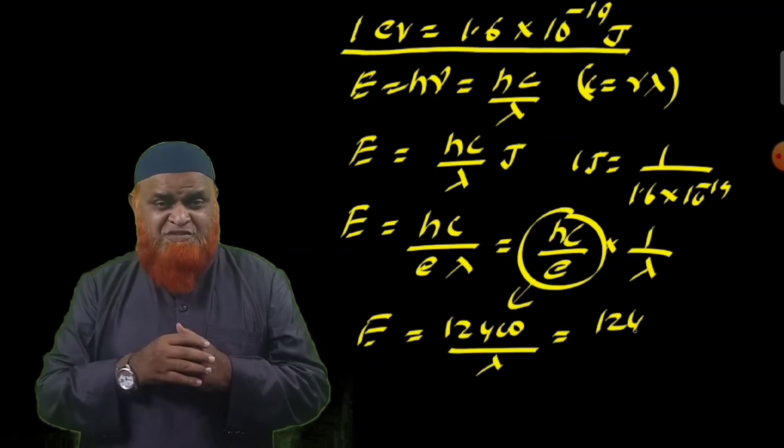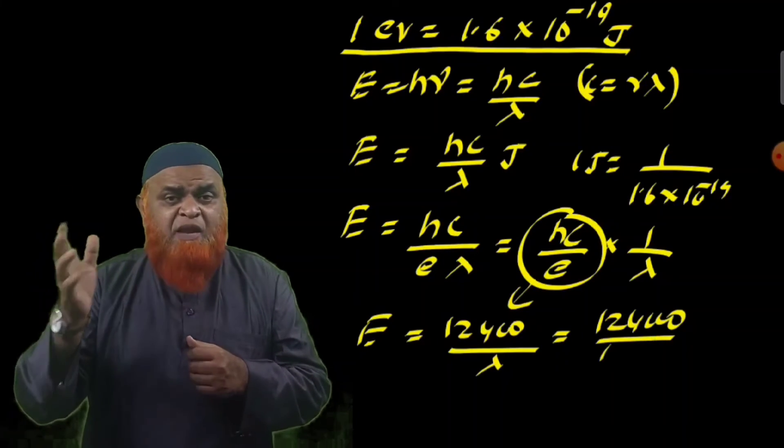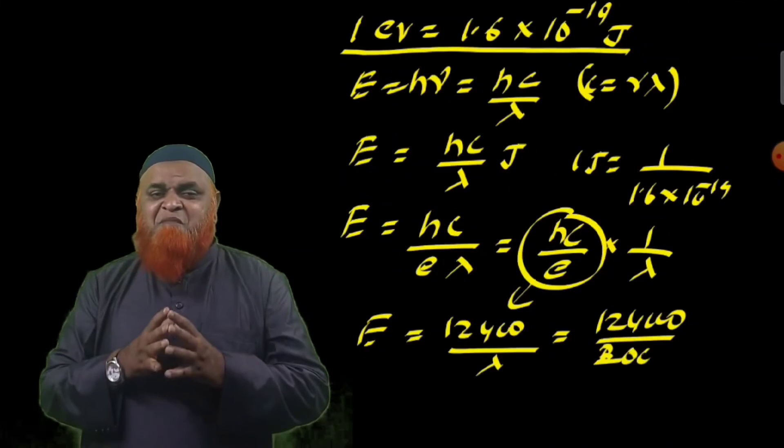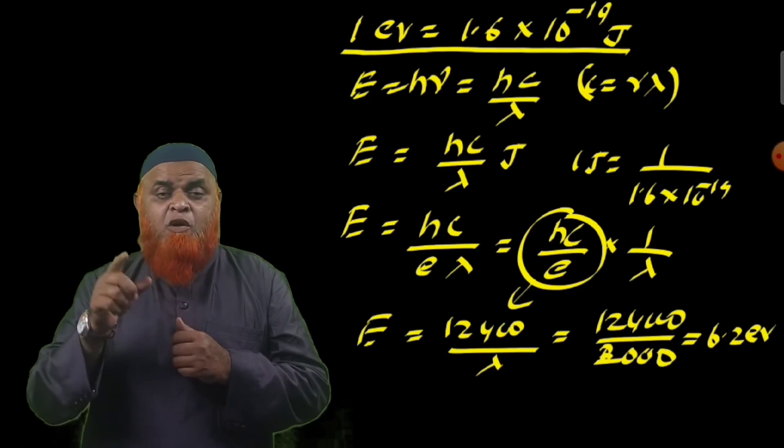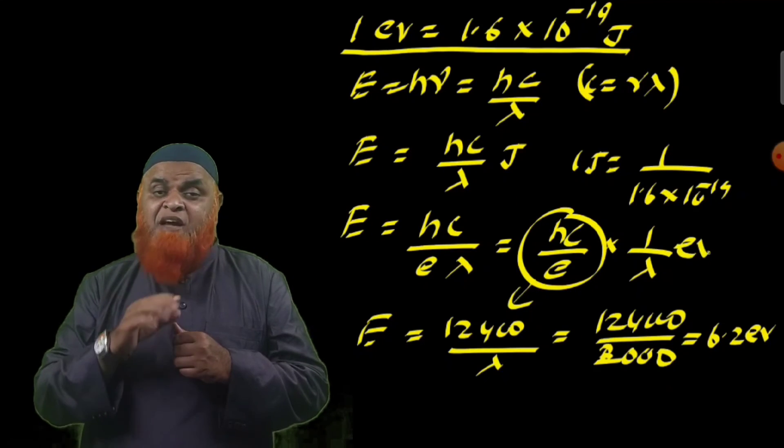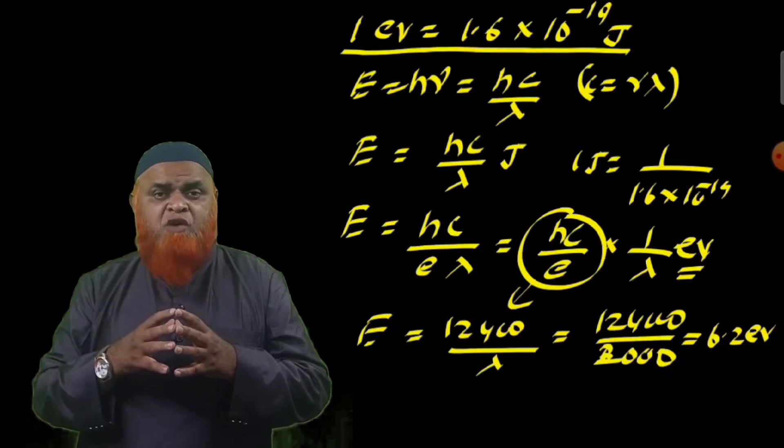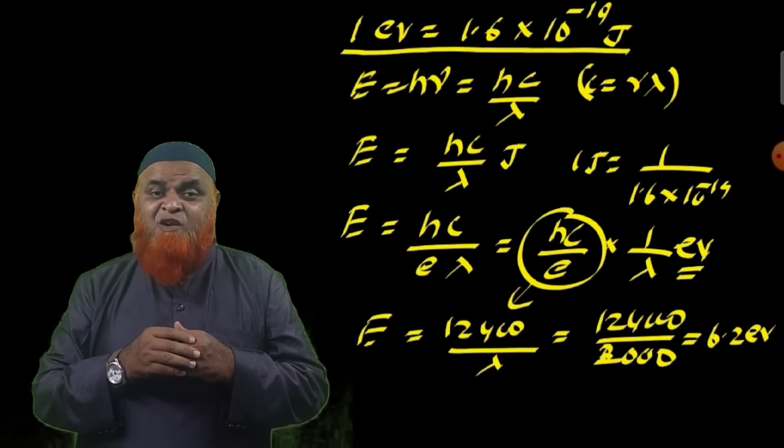For example, if wavelength is given as 2000 Angstroms, you can find out the energy by just writing 12400 by 2000. Then you will get an answer as 6.2 eV directly by substituting the value of wavelength. This is a shortcut method.